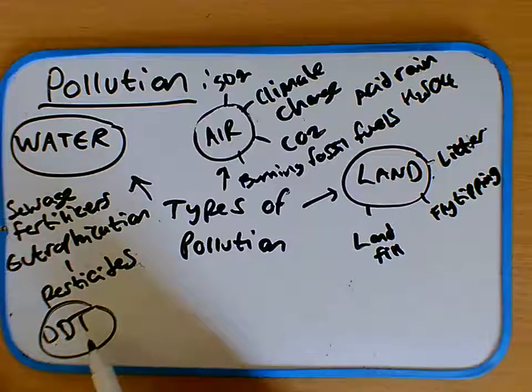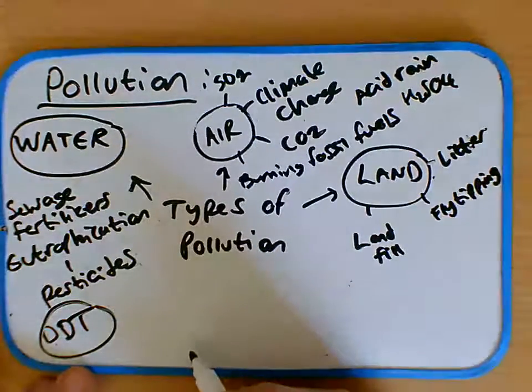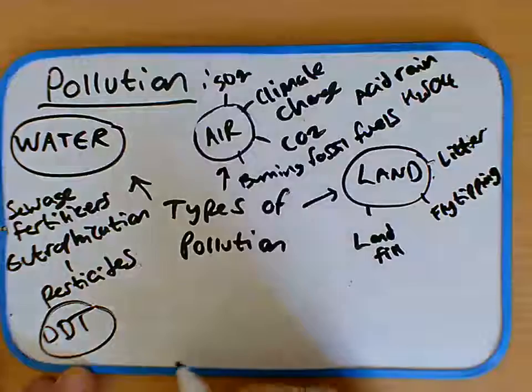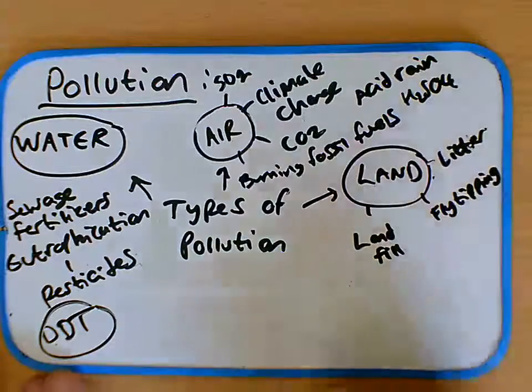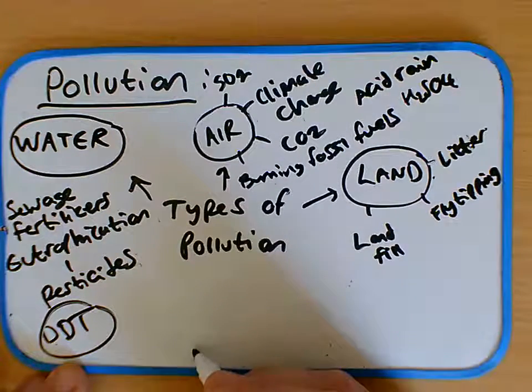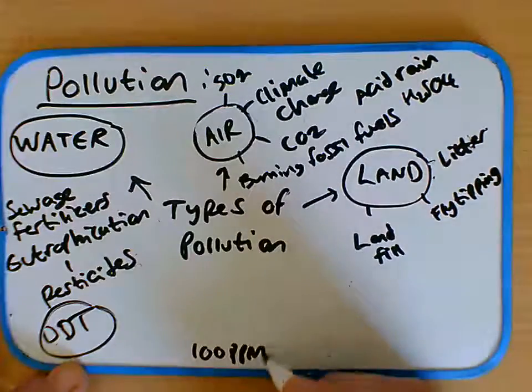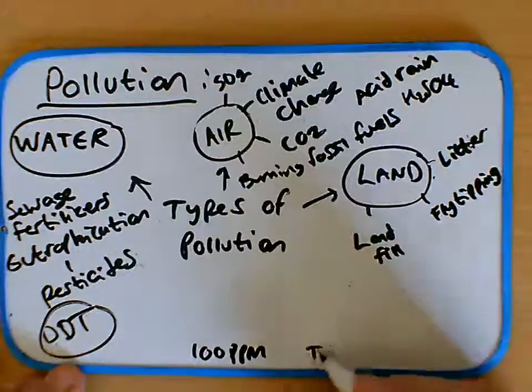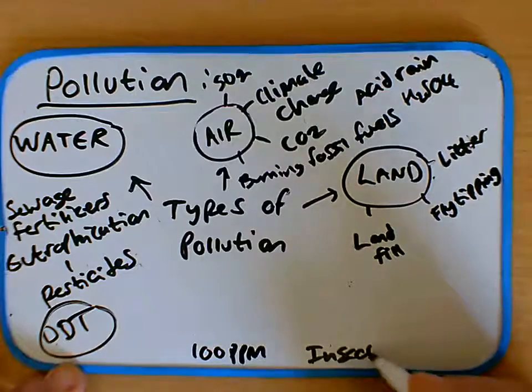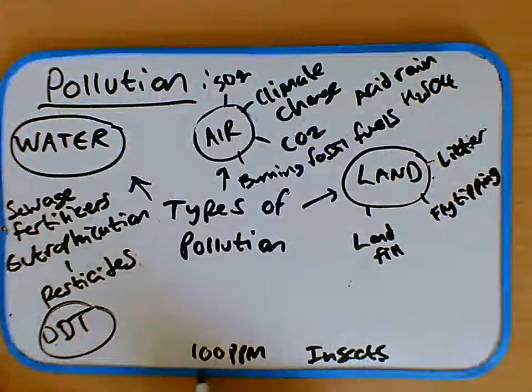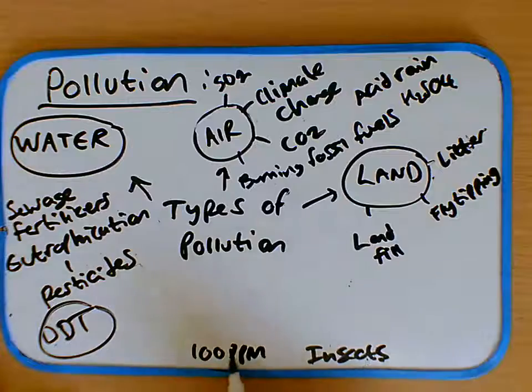And what happened is the DDT ended up in the rivers and streams, but ended up as quite a low level. So let's say, for example, 100 ppm in insects. So what happened is the DDT was at a low level in the insects.